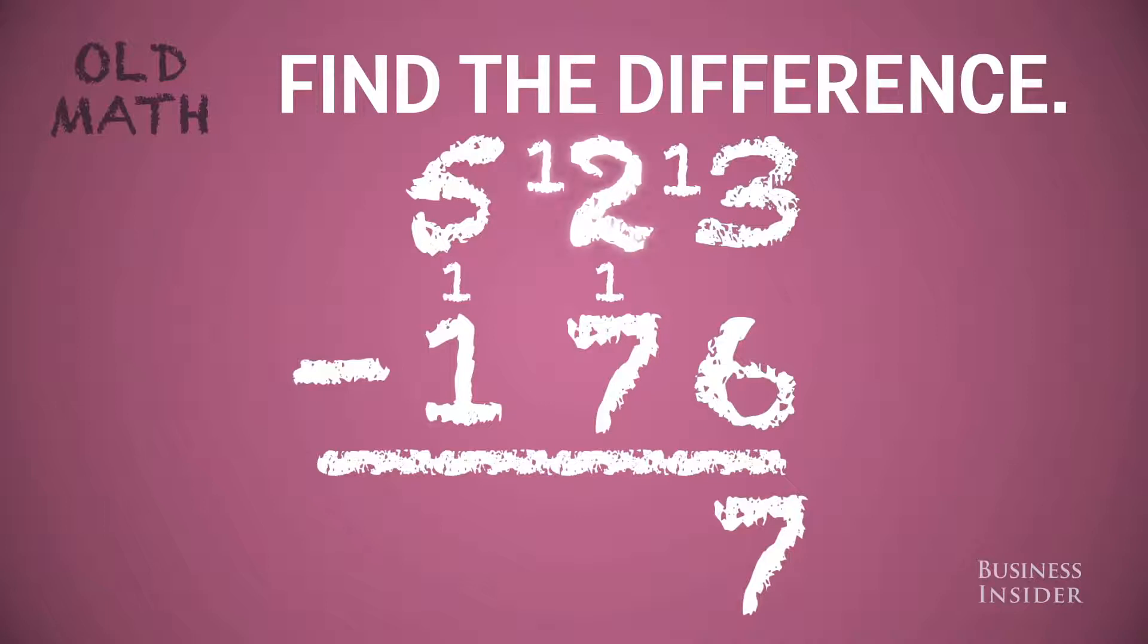Now we need to borrow and pay back again, and 12 minus 1 minus 7 is 4. And 5 minus 1 minus 1 is 3.